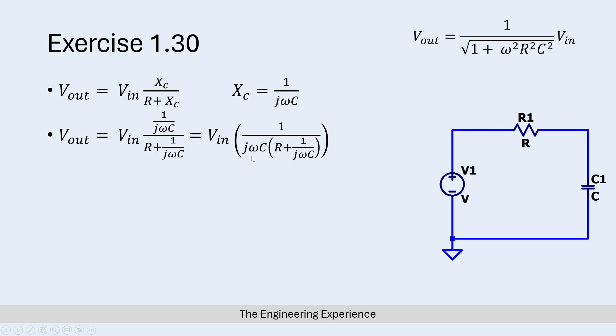The next step would be to multiply this bracket out, so you get jωCR plus jωC divided by jωC. Obviously that instance there will turn to a 1.